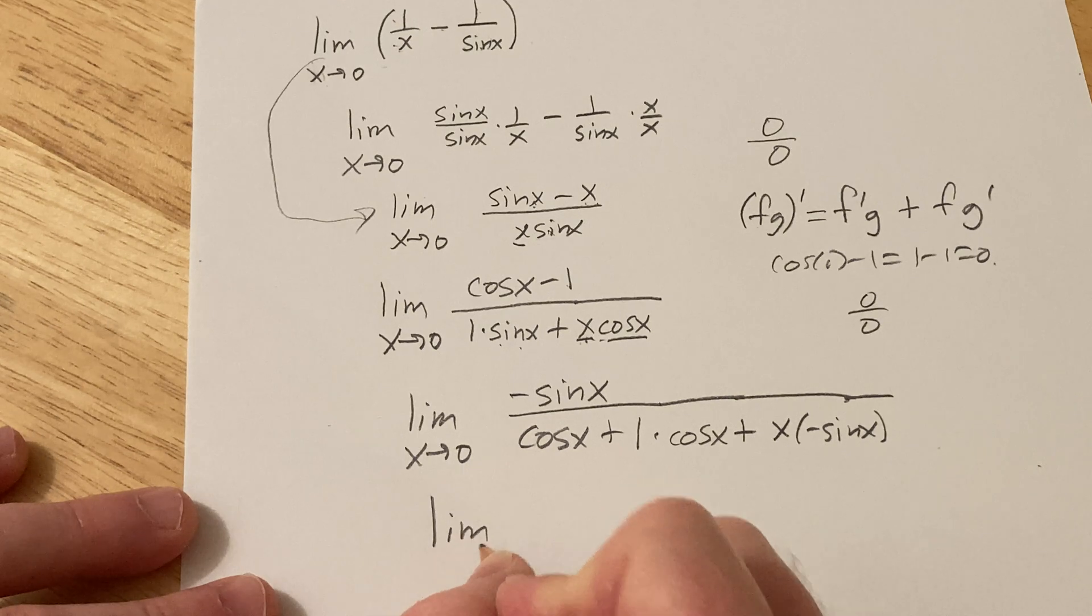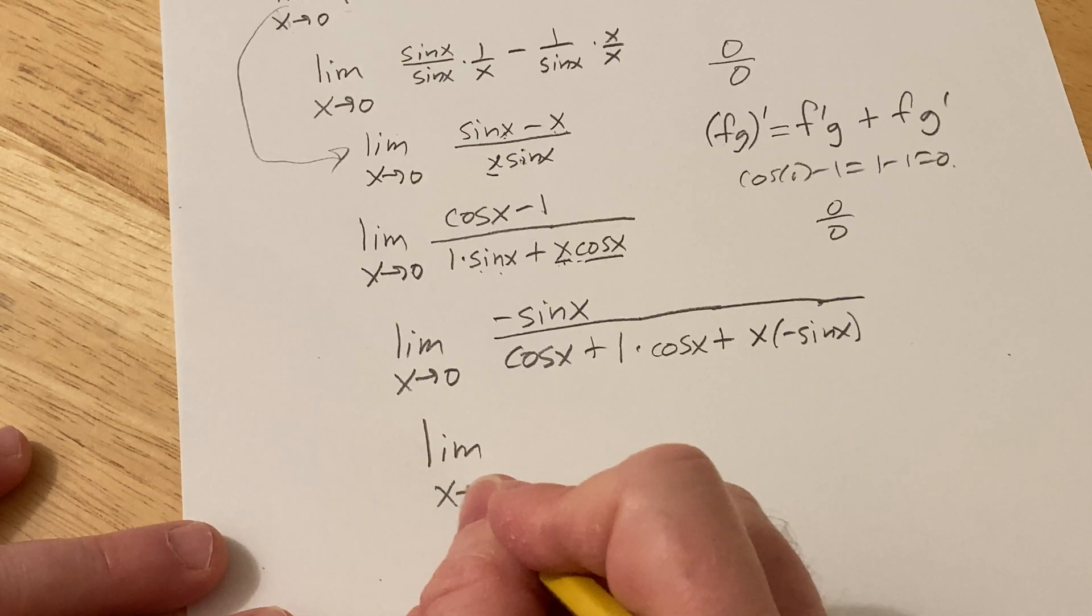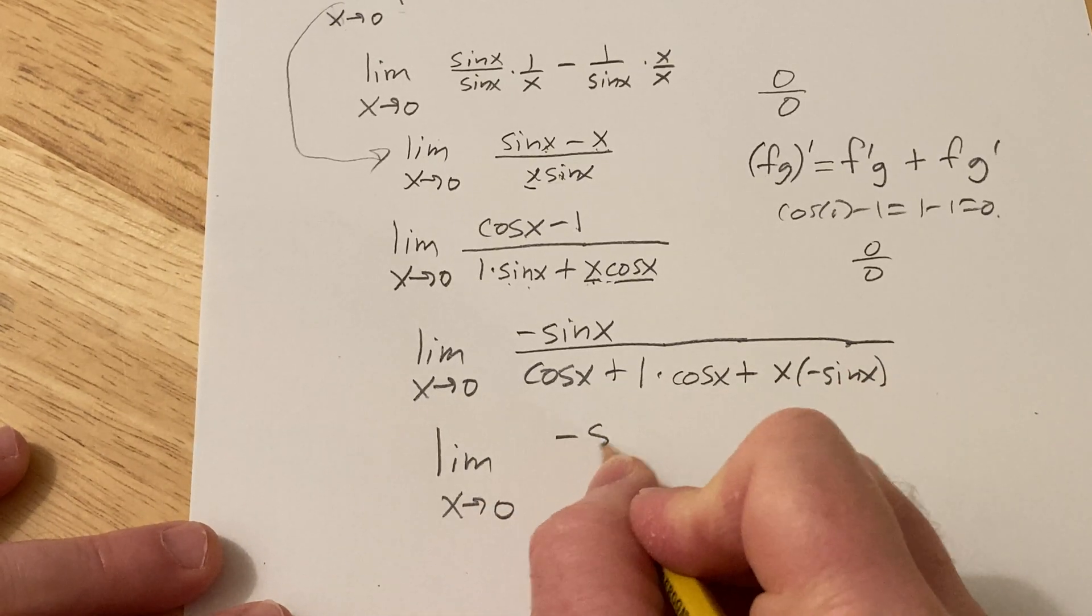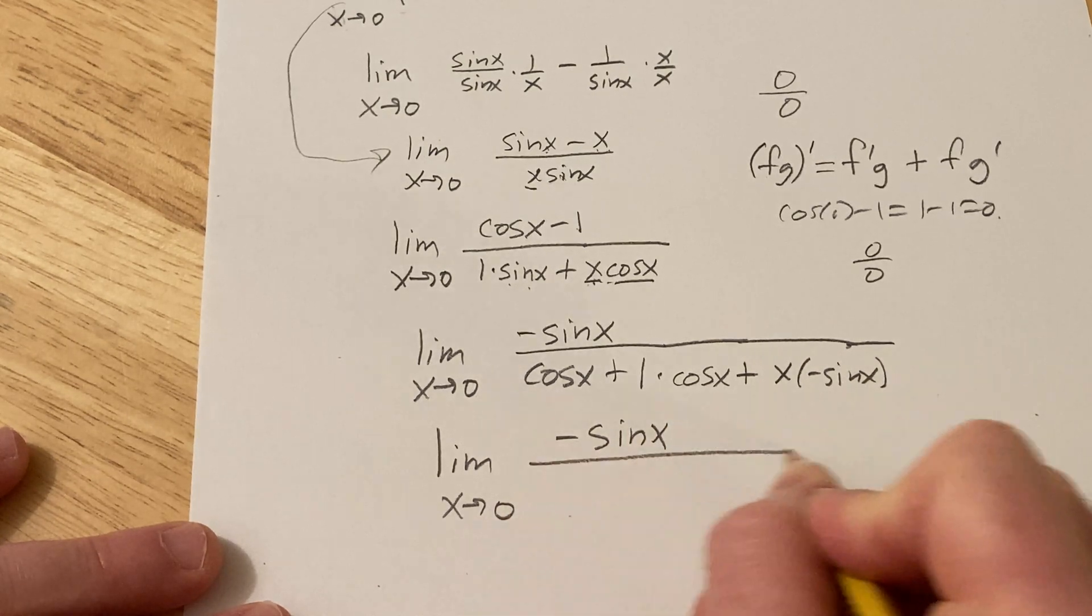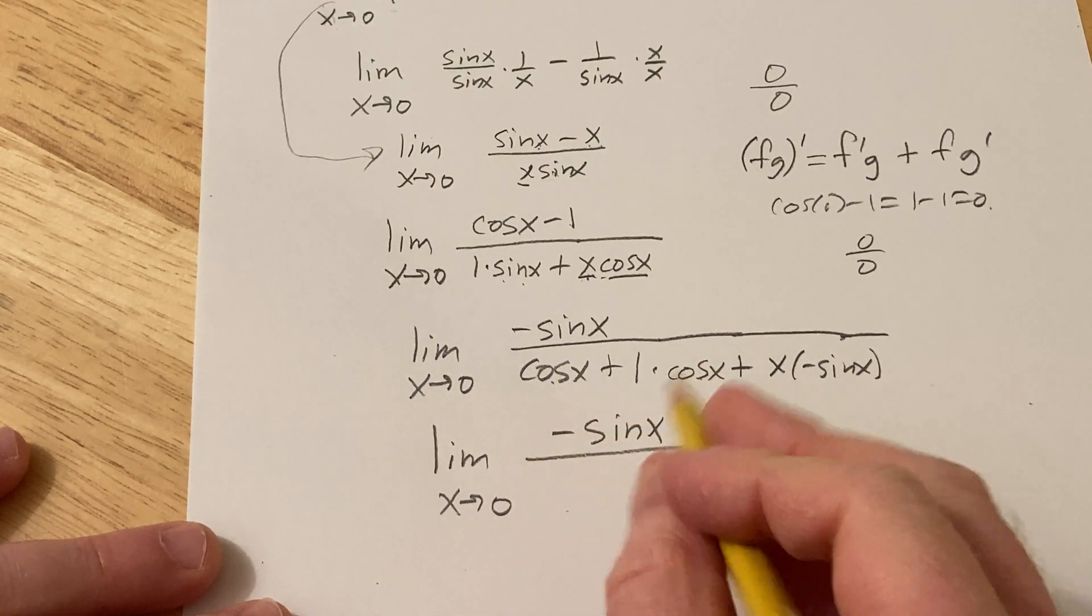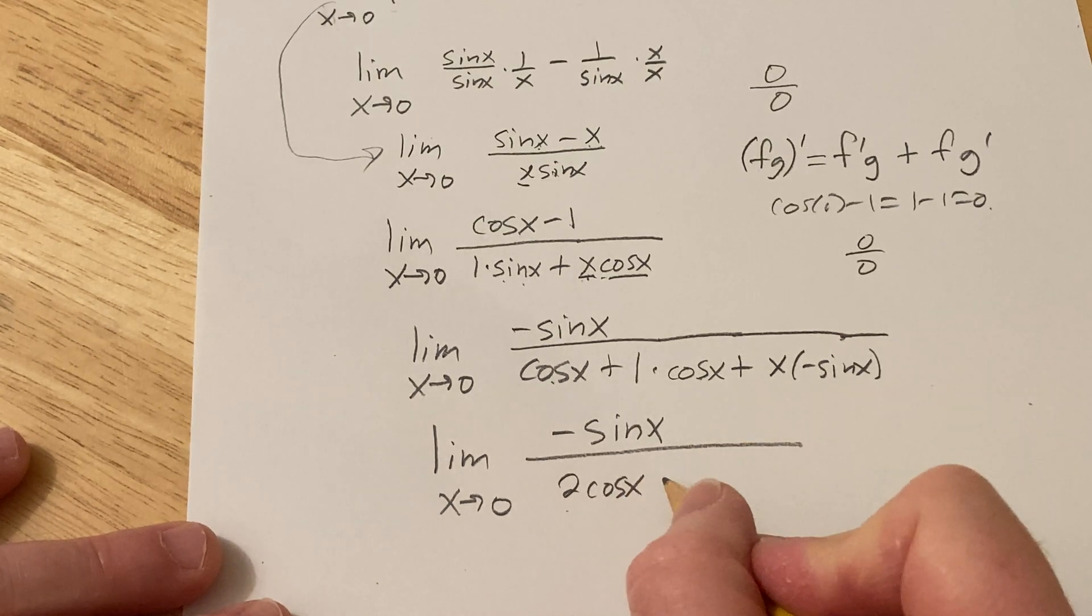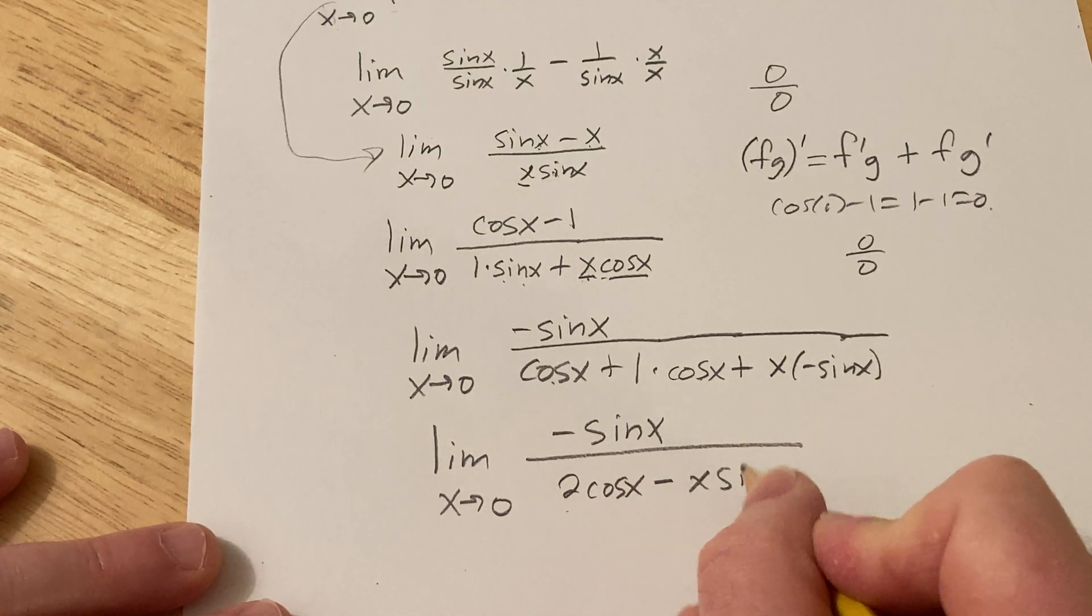So this is equal to, let's see, limit x approaches 0, negative sine x over cosine x plus cosine x is 2 cosine x, and then here we have minus x sine x.